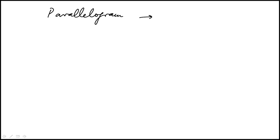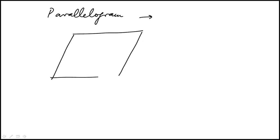Another common type of quadrilateral is called a parallelogram. In a parallelogram, the opposite sides are parallel.